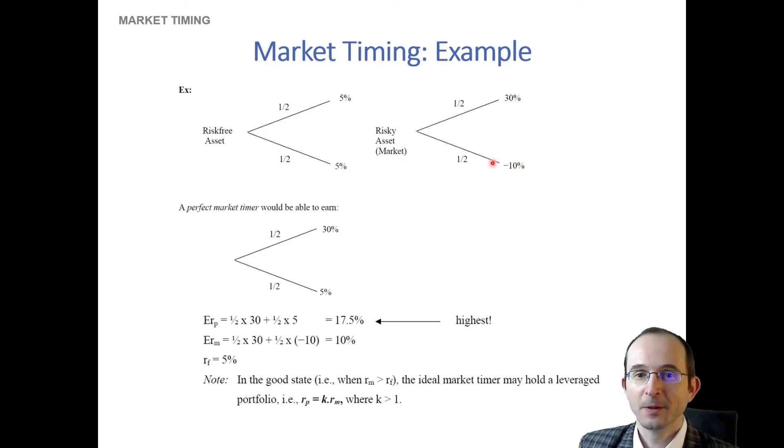The risky asset will pay you a lot in the good state and will actually lose in the bad state, and again, will have the same probabilities. So then a market timer should actually be able to earn the risky asset payoff in the good state and the risk-free asset payoff in the bad state. What would be the expected return to the market timing portfolio? Well, it would just be the chance of the good state times the payoff in that good state, plus the chance of the bad state times the payoff in that state. In other words, the expected value of this payoff tree, and that would be as high as 17.5%.